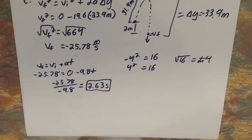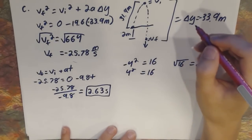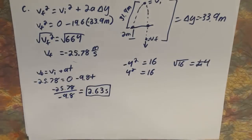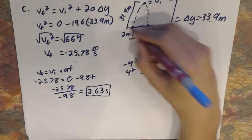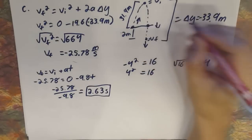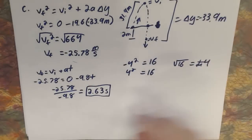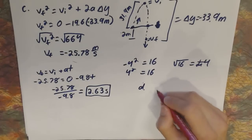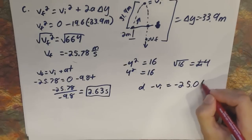Part D asks: what is the ball's velocity when it returns to the level from which it started, which is 2 meters off the ground? This uses the concept that the velocity on the way down at any given height is exactly opposite to the velocity on the way up at that same height. So the answer is just the negative of the initial velocity: negative 25.0 meters per second.